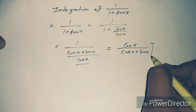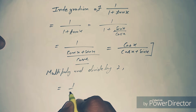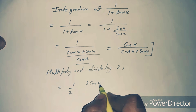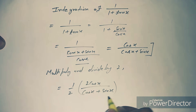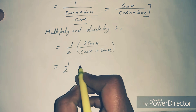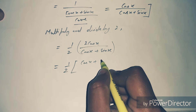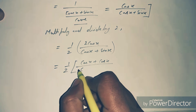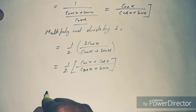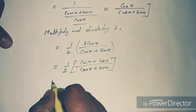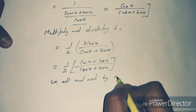Now we multiply and divide this equation by 2, so we obtain 1 by 2 times 2 cos x by cos x plus sin x. We rewrite 2 cos x as cos x plus cos x in the numerator, with cos x plus sin x in the denominator. Then we add and subtract sin x.